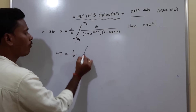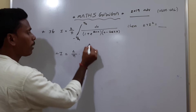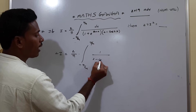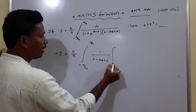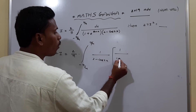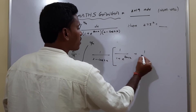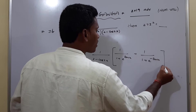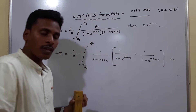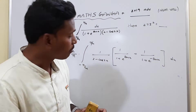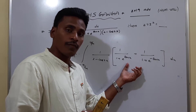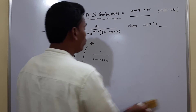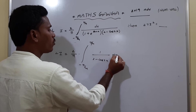So 2I equals 2 by π of the integral from minus π/4 to π/4 of 1 by (2 minus cos 2x) times [1 by (1 + e^(sin x)) plus 1 by (1 + e^(minus sin x))] dx. By simple algebraic simplification, the value of that bracket simplifies to 1, so we can remove it.